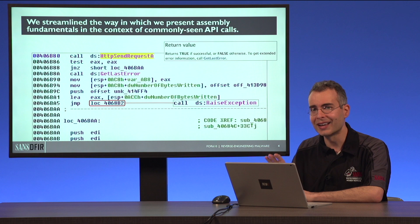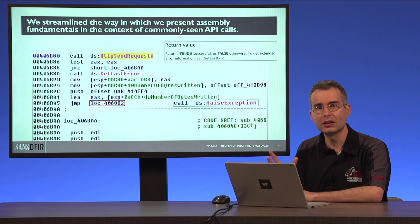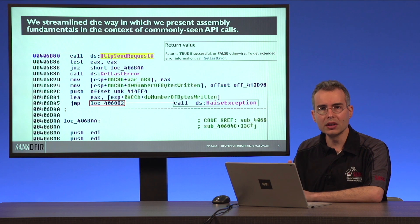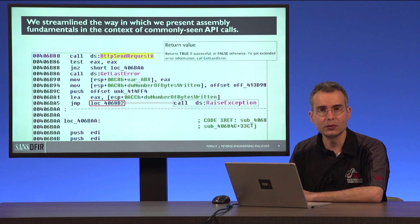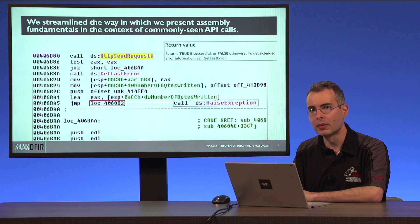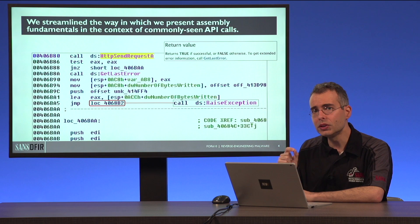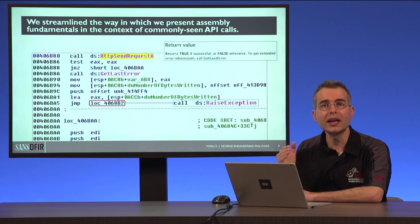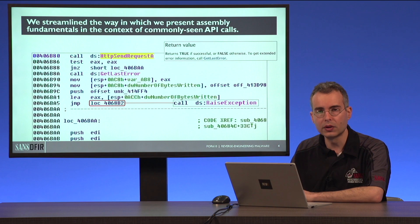and we're covering only those instructions you need to know, because we know that assembly can be easily overwhelming. We're also spending more time looking at how malware uses suspicious Windows APIs to interact with its environment. There is so much you can learn about a malicious program even without looking at the individual assembly instructions, by focusing your attention on the API calls — and we're doing a lot more of that in this version of the course.